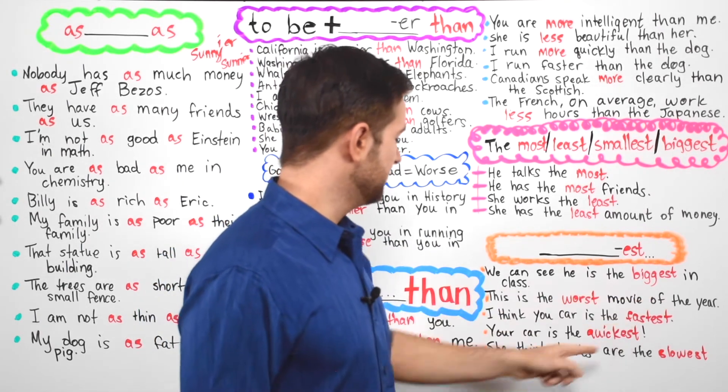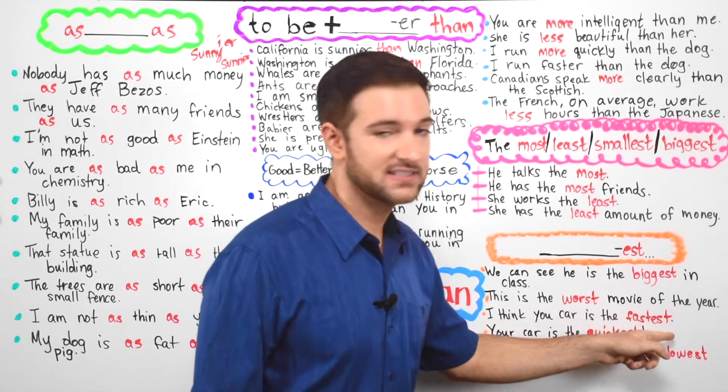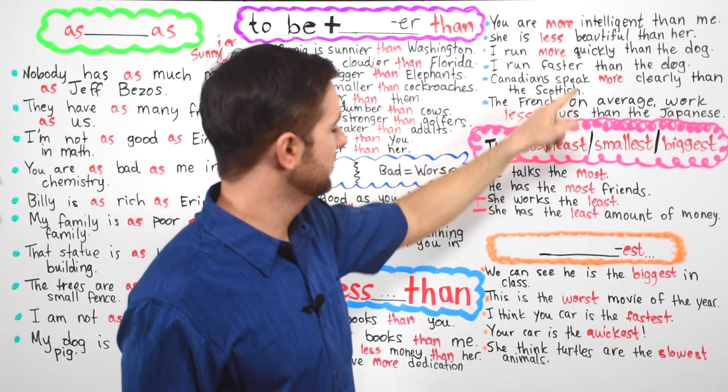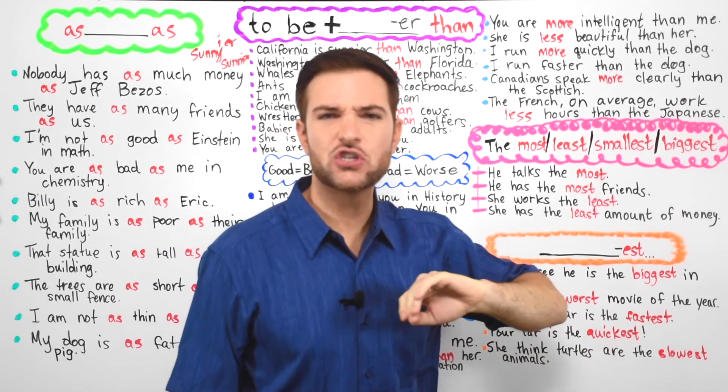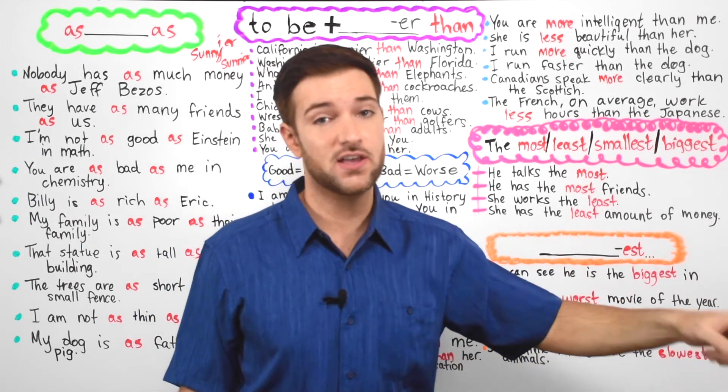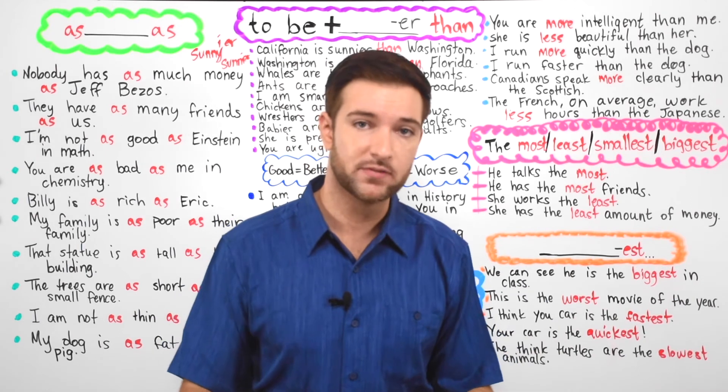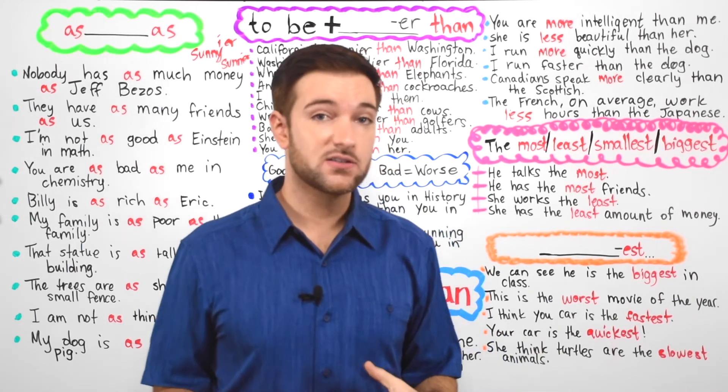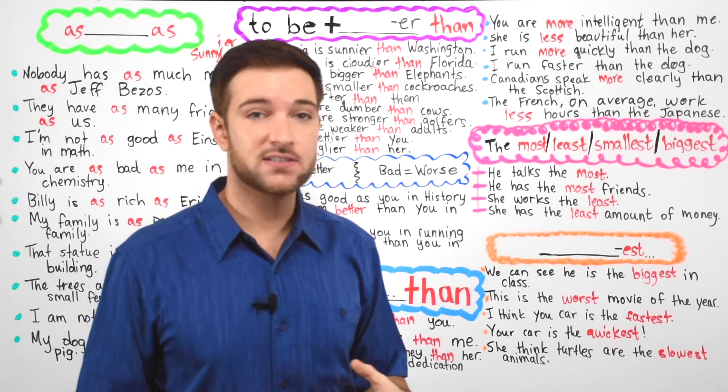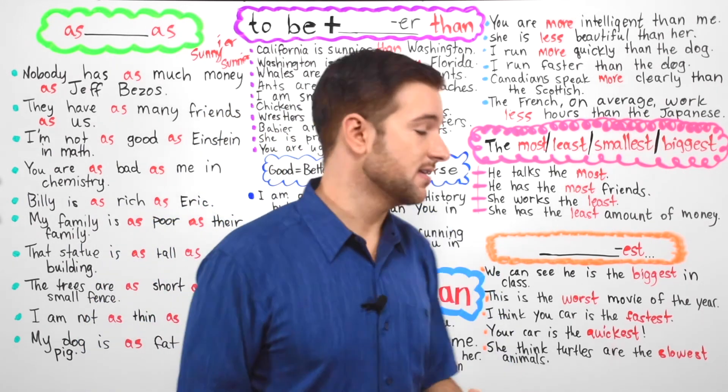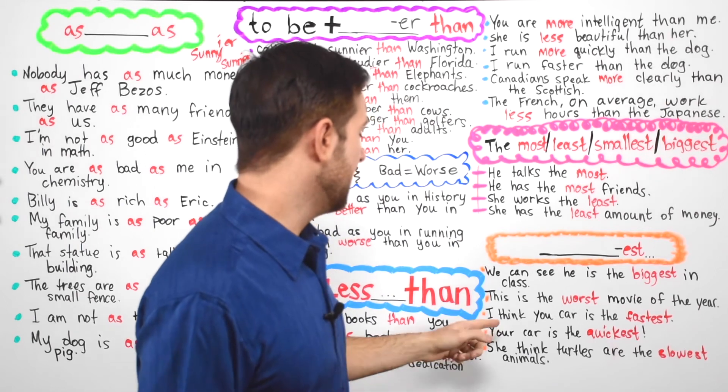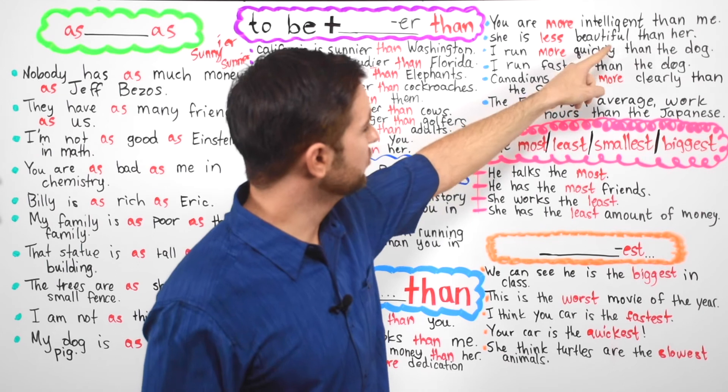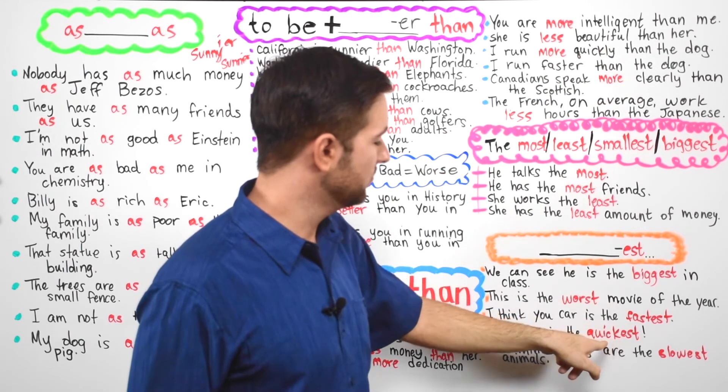This is the worst movie of the year. I think your car is the fastest. Coming from fast. Here we have faster. Here we have fastest. There is no car that is faster than that car. So if you remember, we have the word quickly here as well. And if you want to switch it with fastest, you can drop the L-Y and you can add EST. Thus, you can have your car is the quickest. Coming from quick. Drop the L-Y. No L-Y. We have quickest.